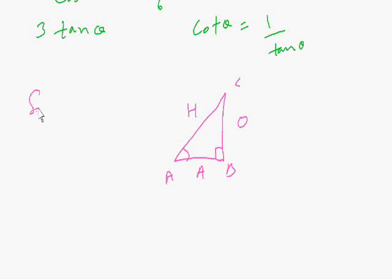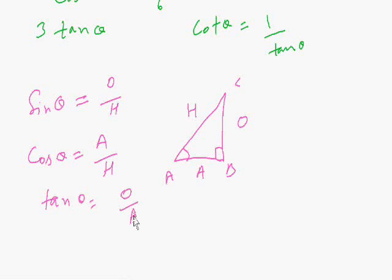Sin theta is the ratio between opposite and hypotenuse, O divided by H. Cos theta is adjacent divided by hypotenuse, A divided by H. And tan theta is opposite divided by adjacent, O divided by A.